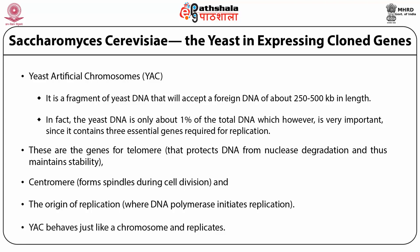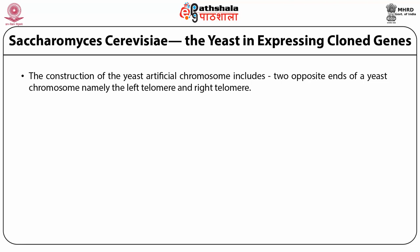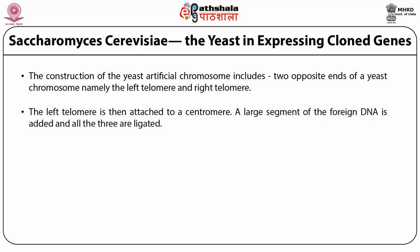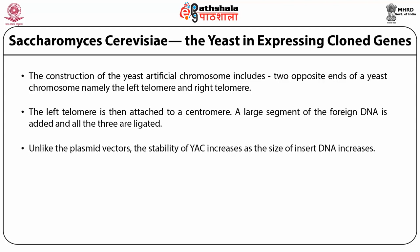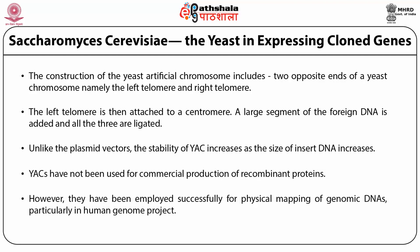The yeast artificial chromosome behaves just like a chromosome and replicates. Its construction includes two opposite ends of the yeast chromosome: the left telomere and the right telomere. The left telomere is attached to a centromere, a large segment of foreign DNA is added, and all three are ligated. Unlike plasmid vectors, the stability increases as the size of insert DNA increases. YACs have been employed successfully for physical mapping of genomic DNA, particularly in human genome projects.